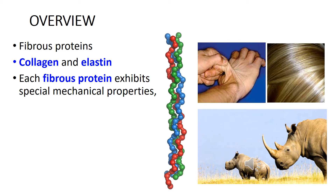For example, collagen and elastin are found in components of the skin, connective tissue, blood vessels, blood vessel walls, and the sclera and cornea of the eye. Each fibrous protein exhibits special mechanical properties resulting from its unique structure, which are obtained by combining specific amino acids in regular secondary structural elements. This is in contrast to globular proteins, whose shapes are the result of complex interactions between the secondary, tertiary, and sometimes quaternary structural elements.